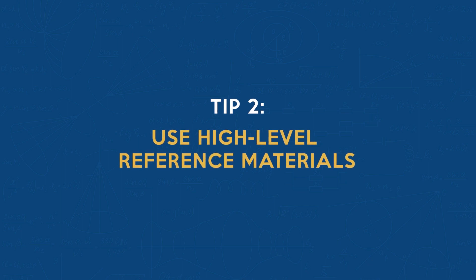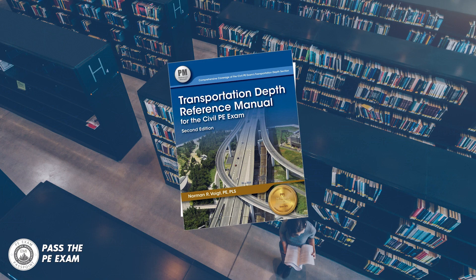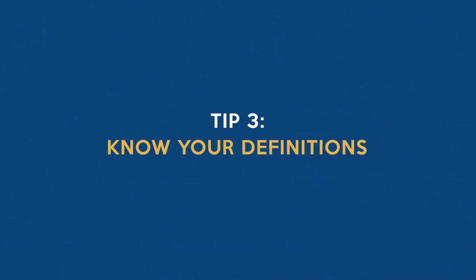Tip number two: use high-level reference materials. There are a number of high-level reference materials available that can be helpful for preparing for the PE Civil Exam. These materials can provide you with a good overview of the topics on the exam, as well as help you to understand the underlying concepts which you will need to know to make things easier and faster.